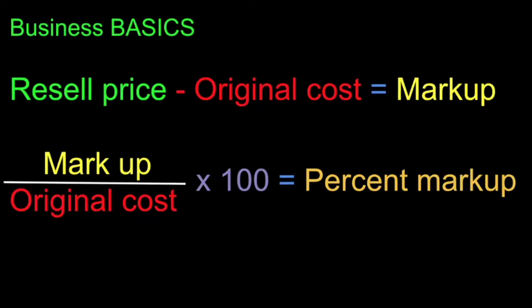If I want to know what percent something got marked up, the formula is: take the markup — which is resale price minus original cost — divide it by the original cost, multiply by 100, and I have my percent markup.